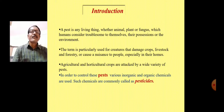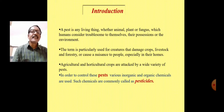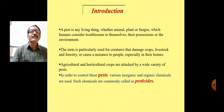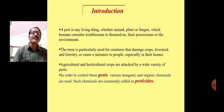A pest is nothing but a living thing, whether it may be animal or plant or fungus. Sometimes it may be a plant like what is called as weeds — unwanted plants. These are very harmful to farmers as they damage crops, livestock and forestry. These pests attack on crops, both agricultural and horticultural. In order to control these pests, various inorganic and organic chemicals are used, and such chemicals are called as pesticides.